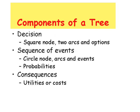There are three broad components of a decision that are displayed in the decision tree. The first component is the decision itself. This is displayed as a square node with two or more arcs coming out and pointing out the options. The second component is a series of events that follow the decision.